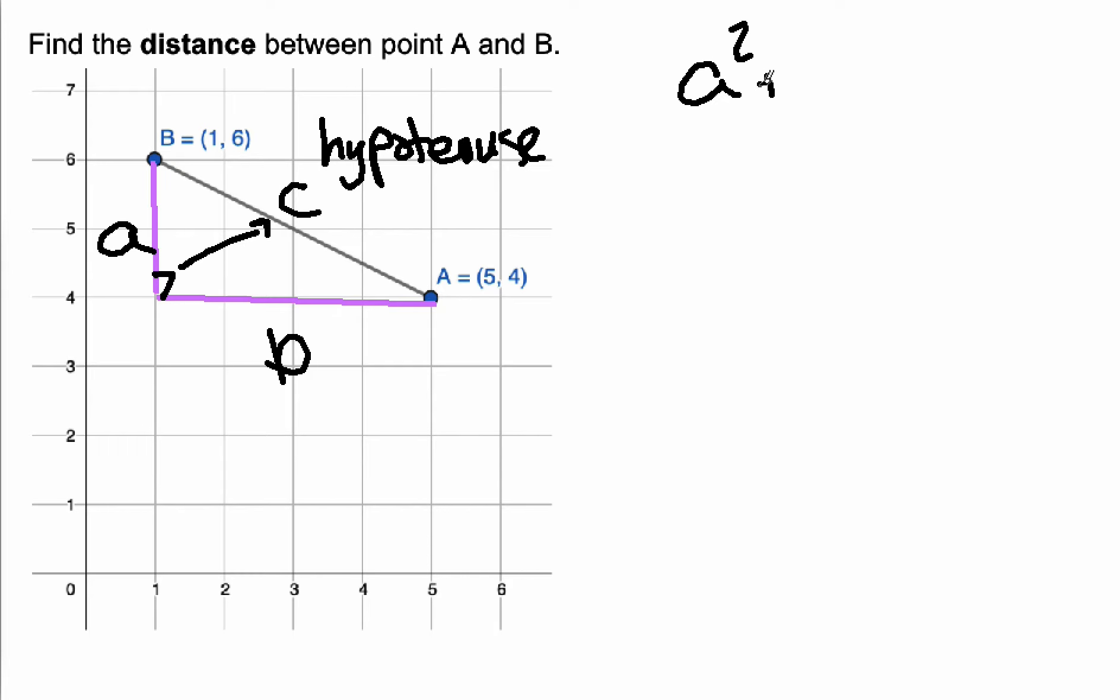So I'm going to get A squared plus B squared equals C squared. And A has a length of 2. B has a length of 4.